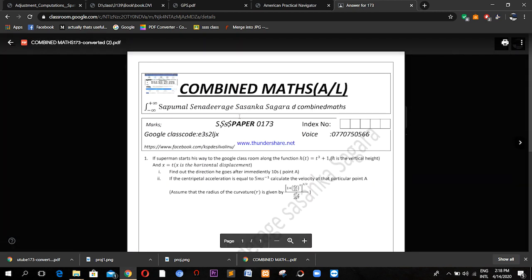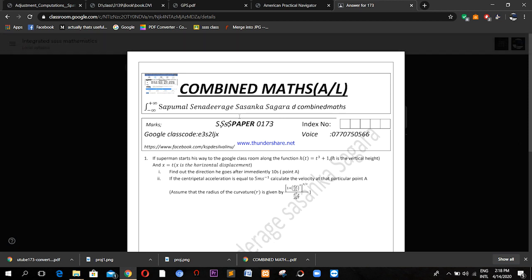The question is paper 173. The question is: if Superman starts its way to the Google classroom along the function h(t) = t³ + 1, here h is the vertical height of Superman. x is defined as x = t, x also is a function of t, x is defined as the horizontal distance, here horizontal displacement, here vertical height.